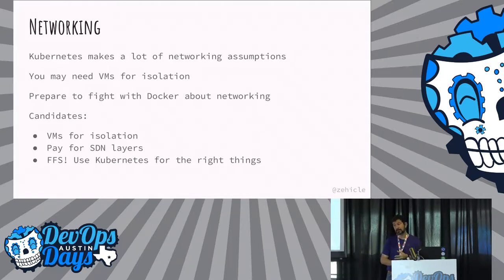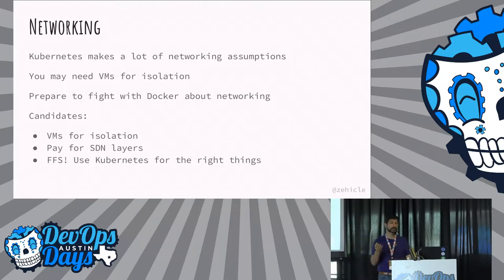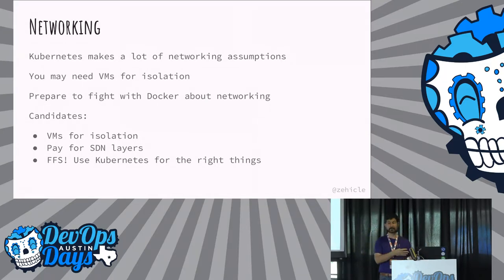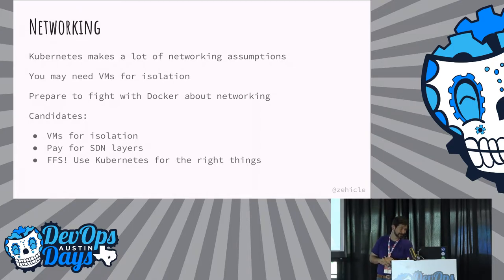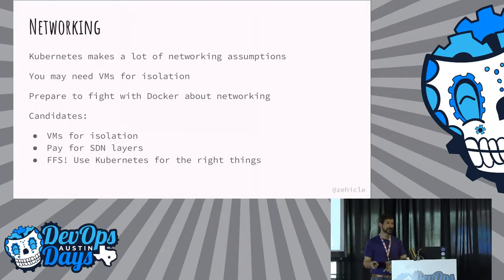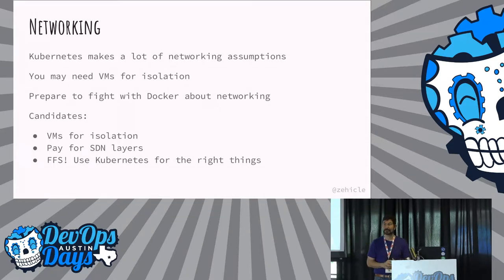There are some really good software-defined networking technologies behind the scenes with Kubernetes — you're going to be using them, like Calico. But you might find it's worth paying for a layer, like paying Tigera for the additional extensions they put behind Calico, because it's a very sophisticated system and having visibility is going to help you. The FFS theme for this talk is: use Kubernetes the right way. If you need really complex networking, containers in general might not be the right thing for your application.